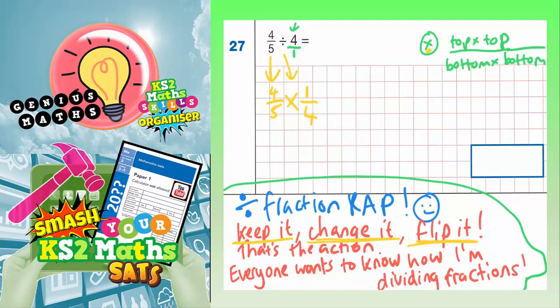We've turned the question into a multiplying fractions question, which we've already said up here is easy. We just do top times top, bottom times bottom. So here we go. Top times top, 4 times 1 is 4. Bottom times bottom, 5 times 4 is 20. So the answer is 4 twentieths.